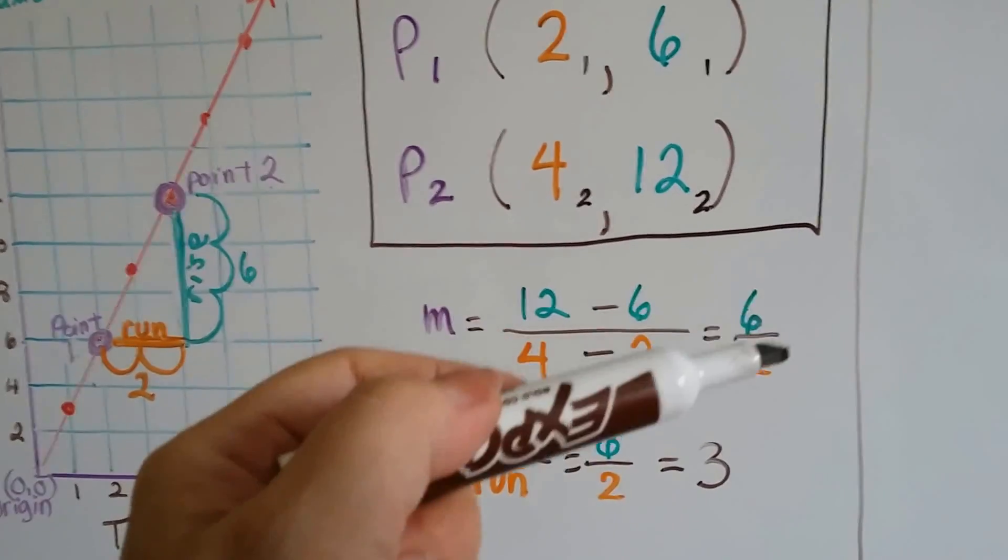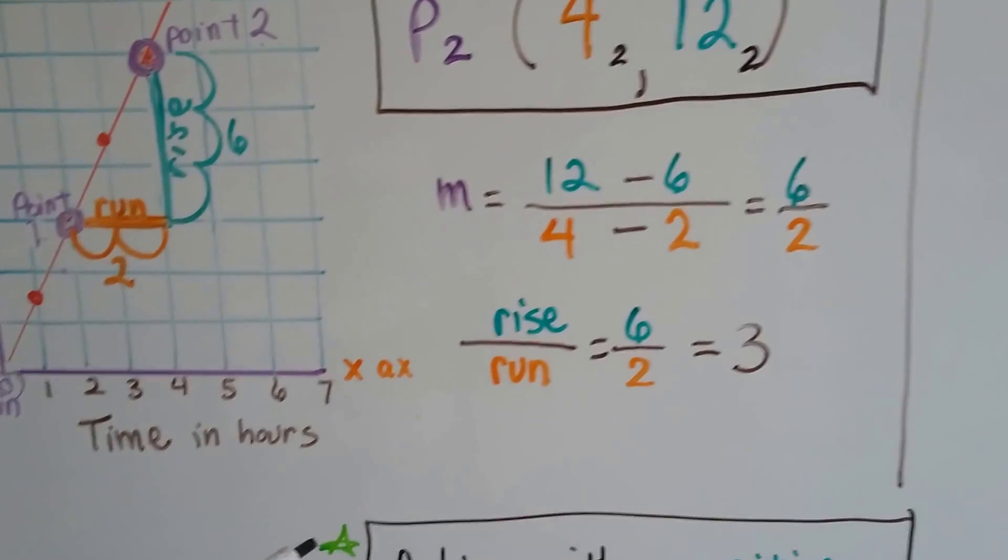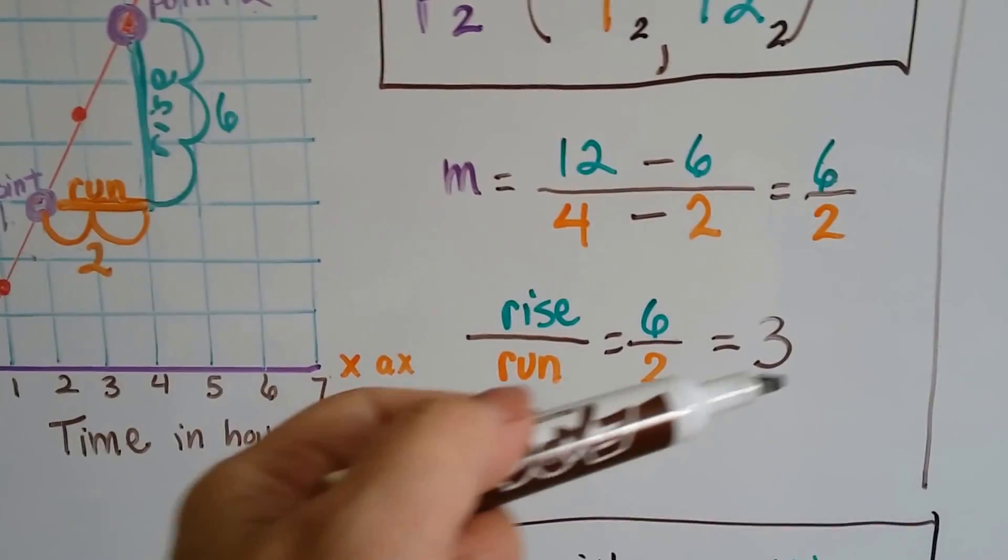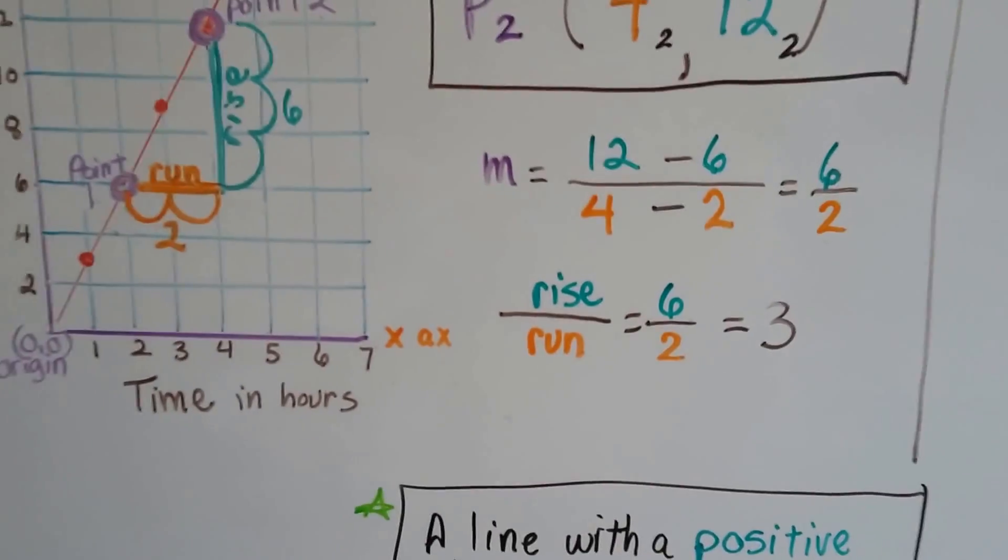Now we've got 6 over 2 as our rise over run. All we have to do is simplify it. 6 over 2 is 3. 6 divided by 2 is 3.